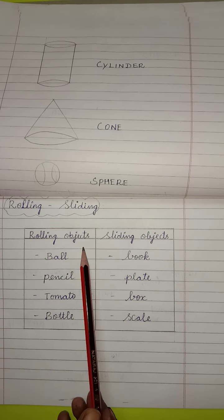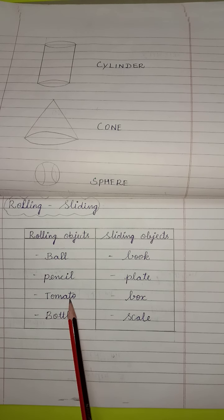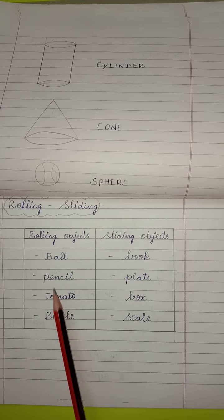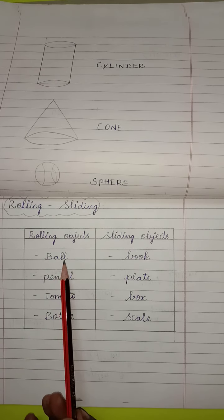What are the rolling objects? We can say, ball, pencil, tomato, bottle. These are rolling objects. B-A-L-L. Ball.